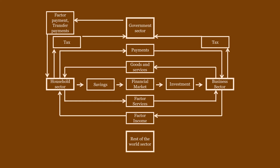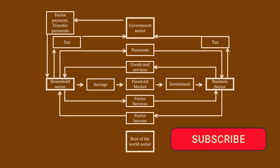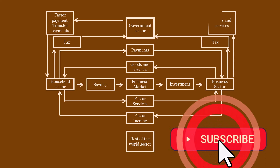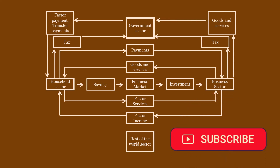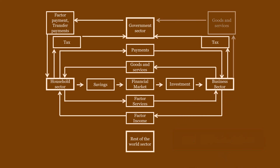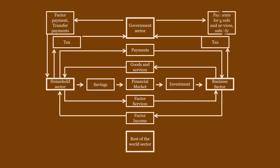Goods and services flow between the government sector and the business sector. The government also provides subsidies to the business sector — this is an injection into the circular flow.